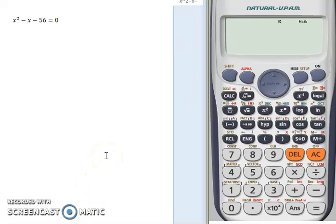Okay, so in this video I'm going to show you how to use the shift solve function of a Casio calculator. For this example, I'm going to show you how to solve this quadratic equation: x squared minus x minus 56 is equal to zero.